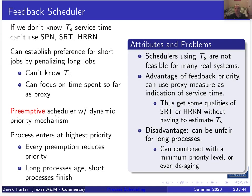The feedback scheduler is a preemptive scheduler with a dynamic priority mechanism. We have multiple queues, and processes enter at the highest priority level. Every time a process gets preempted, we reduce its priority and move it down to the next lower priority queue.